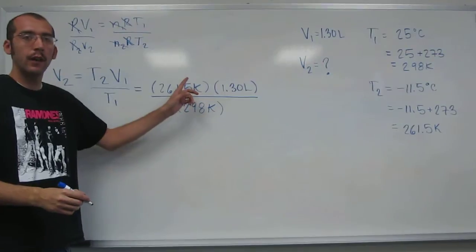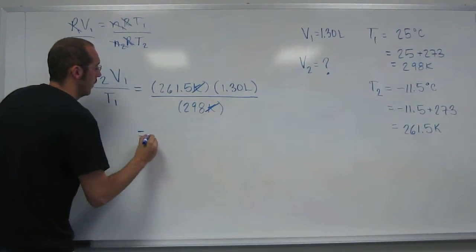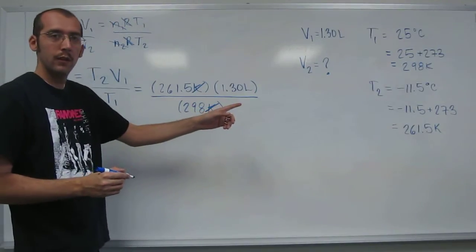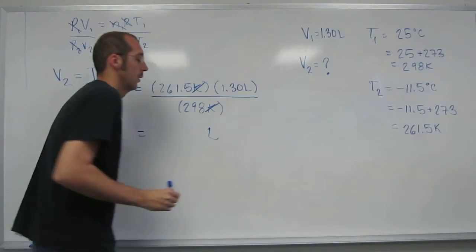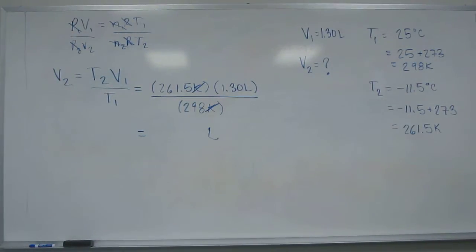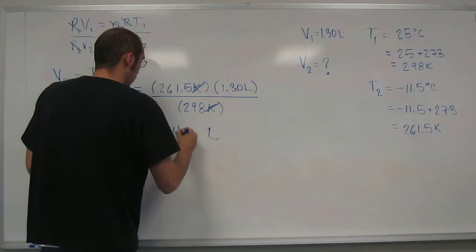Notice, Kelvin divided by Kelvin cancels. And you're left with what? Liters. Liters. Is that what you want? Yes. Yeah, because you're looking for a volume. That's awesome. So do liters. And then all we got to do now is take 261.5, multiply that by 1.3, divide that by 298. And I got 1.14 liters.